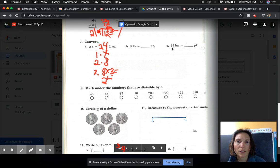Then you have pounds to ounces, bushels to pecks. Remember in the back of your book, in the appendix, you should have those conversion special numbers there. And then you have mark under the numbers that are divisible by 5. So if it ends in a 0 or 5, that's the divisibility rule for 5. Circle 1 tenth of a dollar. Think about that. Measure to the nearest quarter inch. Hopefully you have a ruler at home.